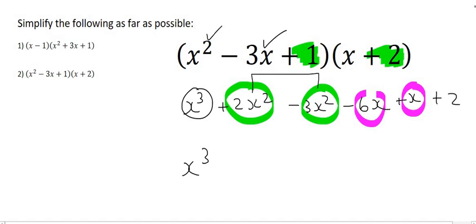Then for the x squared, you can just type this in on your calculator. 2 minus 3 is just minus 1. Then for the purple, it's going to be minus 6 plus 1. You can just type that in on the calculator if you want, and that's going to give us minus 5x. And then the plus 2 we'll just put at the end.